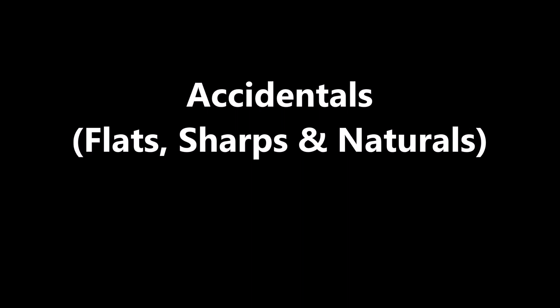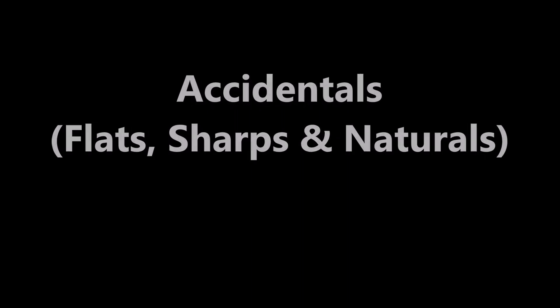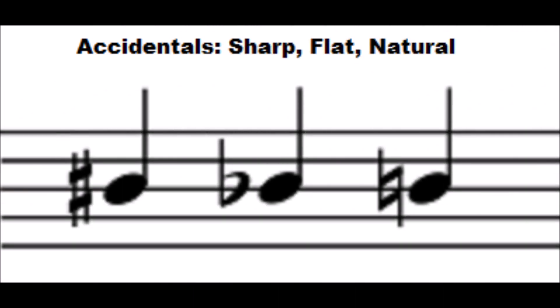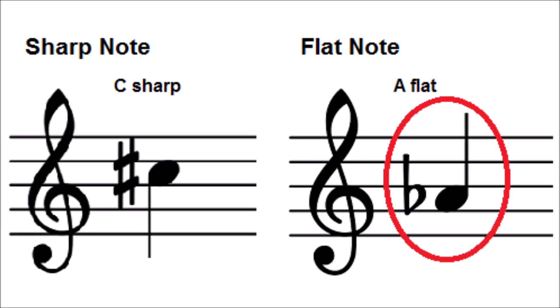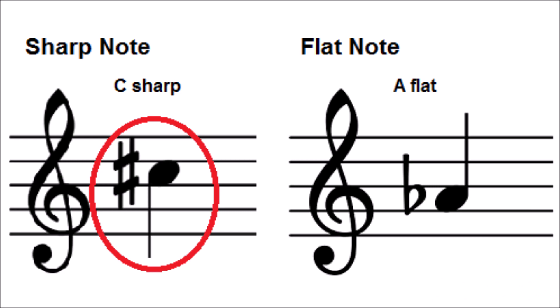Accidentals: flats, sharps, and naturals. Now that you understand what a semitone, or half step, is, we will take a look at flats, sharps, and naturals. A flat lowers a note by a semitone. The flat sign is often written like a small b. So if you come across this, you say B flat. A sharp raises a note by a semitone. The sharp sign looks like a hashtag. So if you come across this, you say F sharp.